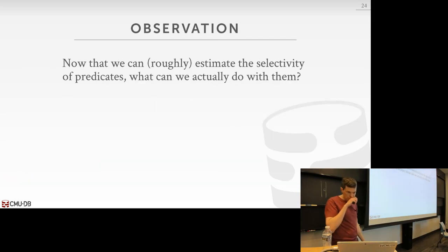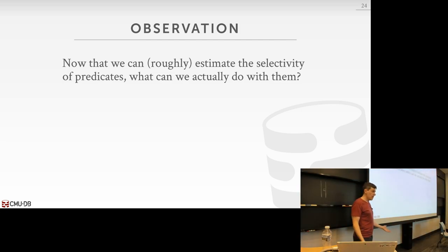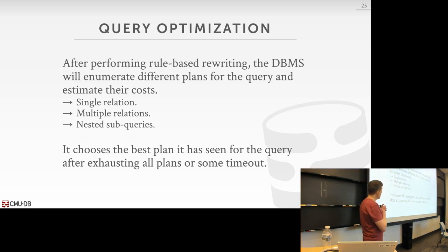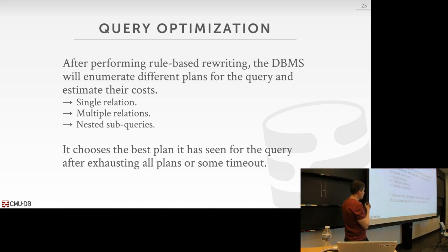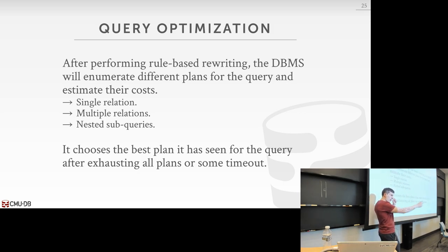So at this point we can roughly estimate the selectivity of our predicates. Now we enter the cost-based search to figure out how to convert the logical plan into a physical plan. The physical plan is what the database system actually executes: the logical plan says 'join these two tables,' while the physical plan says 'join these two tables with this algorithm, this buffer size, this sort order, and so on.' For single relations it's straightforward. For multi-relation or n-way joins, it's harder — it's not only about what join algorithm to use, but what order to do the joins.